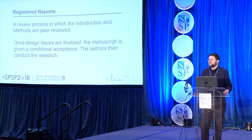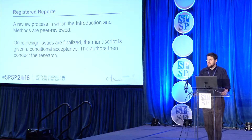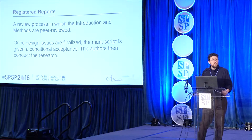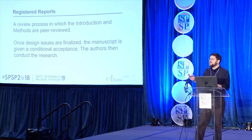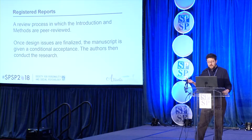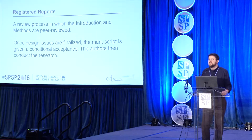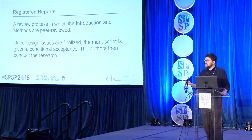One idea discussed a lot recently is registered reports, or what Joe Cesario referred to as peer-reviewed registered reports. This is a process journals or conferences can use where researchers propose the ideas they want to examine, hypotheses they want to test, and methods they plan to use. These are reviewed by editors and reviewers, potentially modified, and if accepted, researchers receive an in-principle acceptance: if they follow through with the recommendations, the paper will be published regardless of the outcomes. This is a potential mechanism to focus on methods without biasing our literature based on whatever the results happen to be.